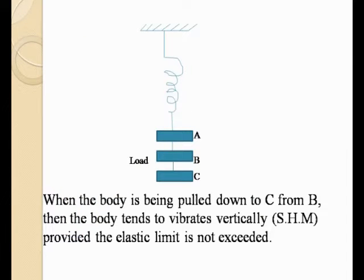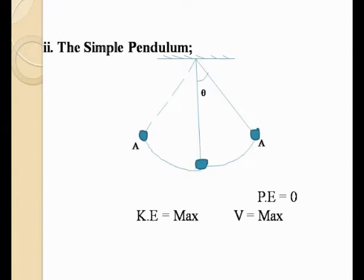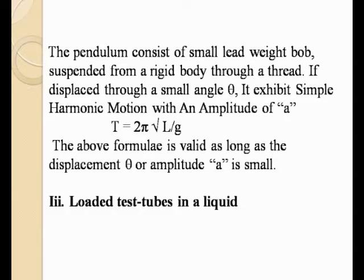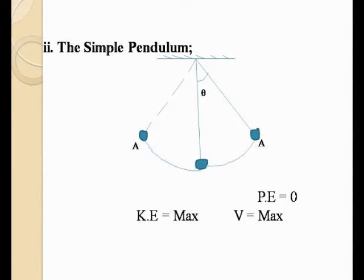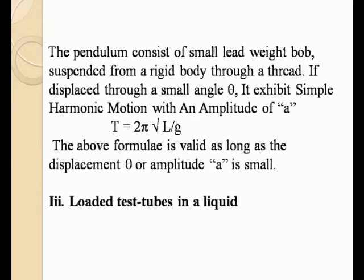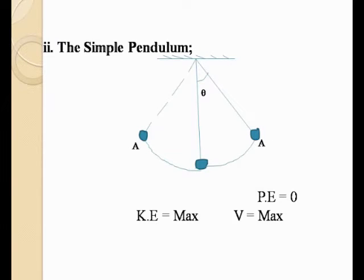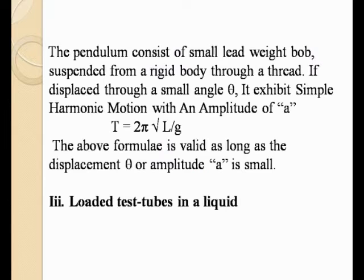Another body that can undergo simple harmonic motion is the simple pendulum. A pendulum consists of a small lead weight bob suspended from a rigid body through a thread. If the bob is displaced through a small angle theta, that is the angle of displacement, and it goes to and fro — at that point you will also have what we call the amplitude.